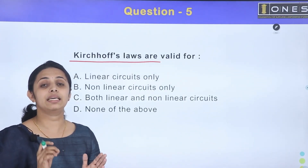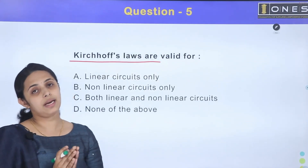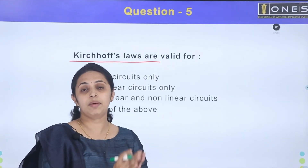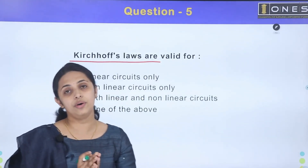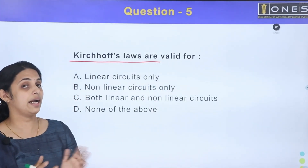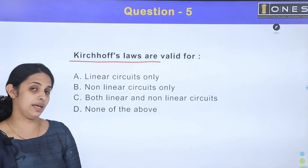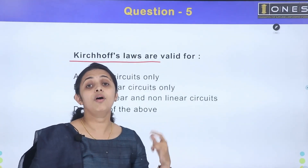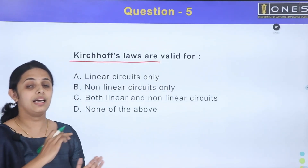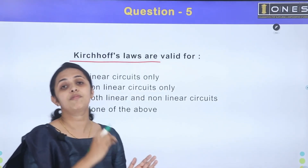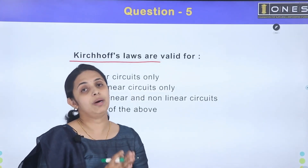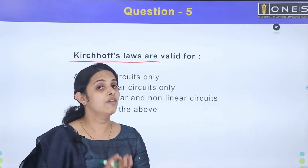At any junction the sum is zero — in other words, the incoming current equals the outgoing current. Kirchhoff's voltage law states that the sum of voltage drops plus the EMF acting around a closed circuit is equal to zero.